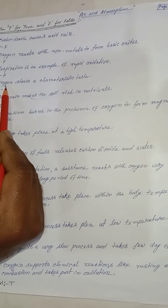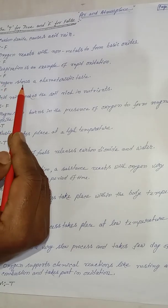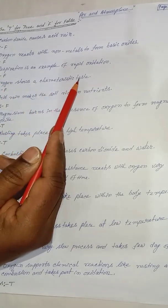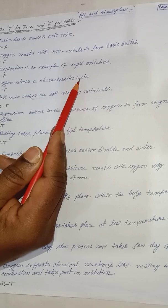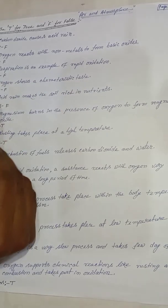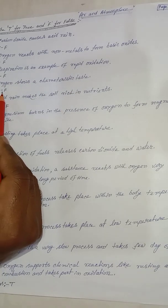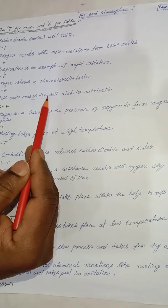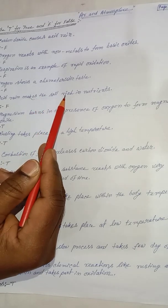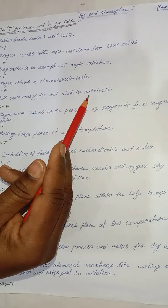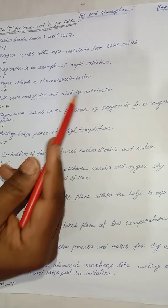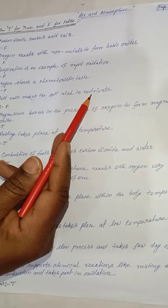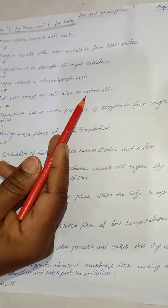Oxygen shows a characteristic state — false. Acid rain makes the soil rich in nutrients — false; it damages the soil.